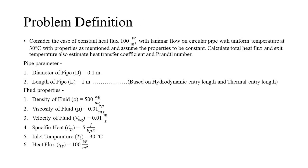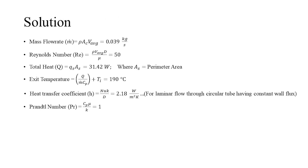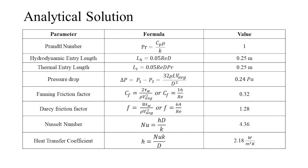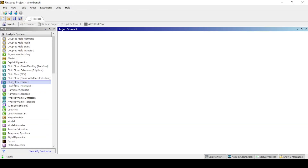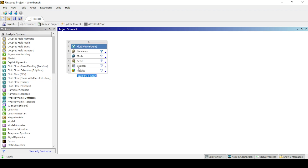The following is the problem considered for the simulation, along with its pipe dimensions and the fluid properties, which are assumed to remain constant throughout the simulation. Using the mentioned formulae and relations, we can analytically find out the answers. The following are the parameters valid for the flow described in the problem, which are to be validated against the simulated results. The geometry and meshing is the same as used in the laminar flow through a circular pipe having constant temperature video. For detailed explanation, please refer to the same using the link in the description.